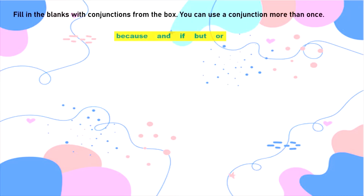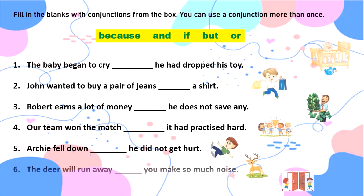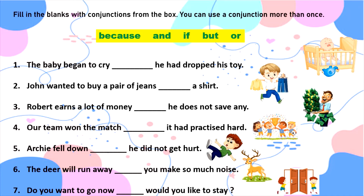Here is a small worksheet in which you will have to fill in the blanks with conjunctions from the box. You can use a conjunction more than once. In the yellow box there are five conjunctions given: because, and, if, but, or. Below that there are seven sentences. You will have to choose the correct conjunction from the yellow box and fill in the blanks. Complete your worksheet and I will give you the answers after some time.